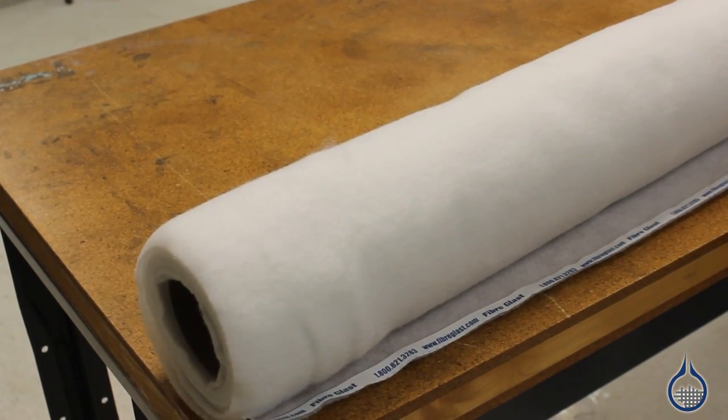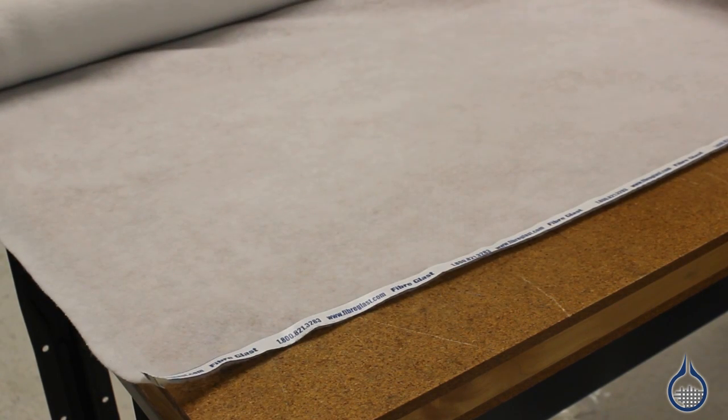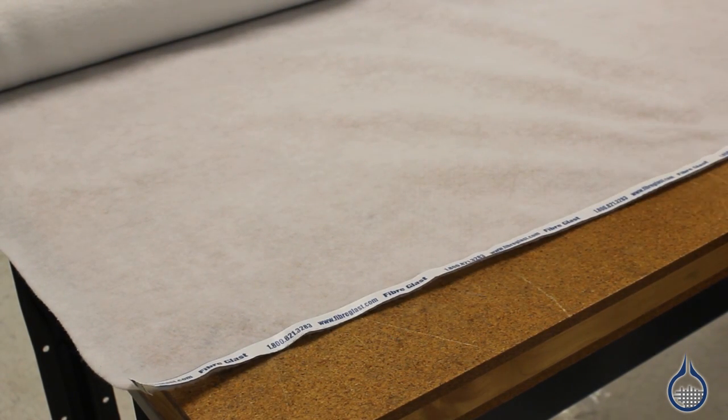Compared to the 579, the 1779 7-ounce breather can be used in higher pressure cure cycles and helps to provide a lower amount of surface porosity.